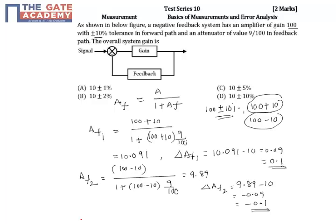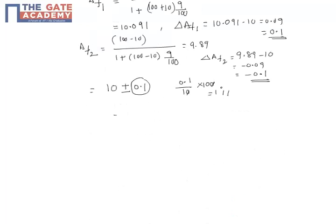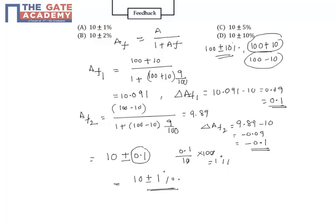Finally, the gain of the overall system is equal to 10 plus or minus 0.1. Since he is asking in percentage, if I convert this as 0.1 by 10 times 100, this is equal to 1 percent. So this is equal to 10 plus or minus 1 percent.